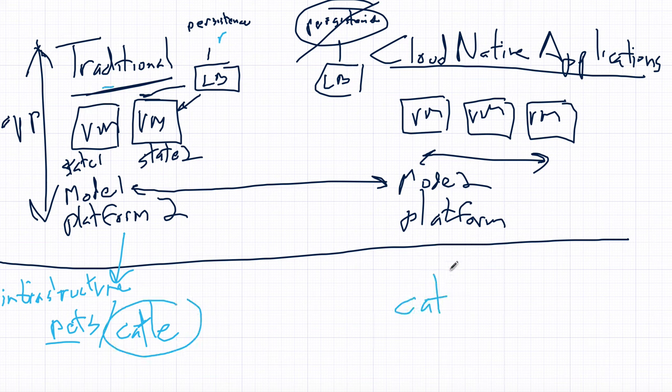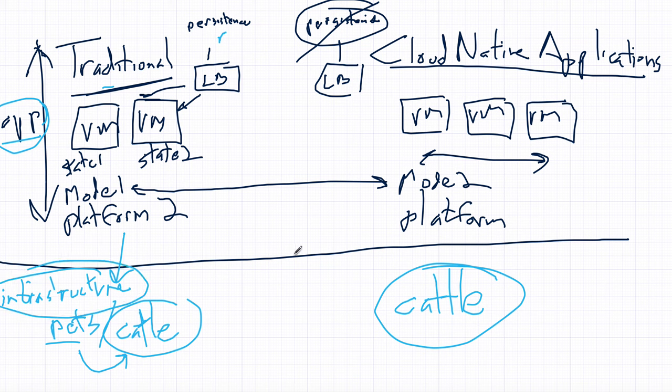Now, of course, on the cloud native world, this is almost always cattle and there's no reason to do pets. But we can migrate to a cattle style operation with traditional applications. So, again, we're separating the application realm from the infrastructure realm. So, we can move to cattle for traditional applications.